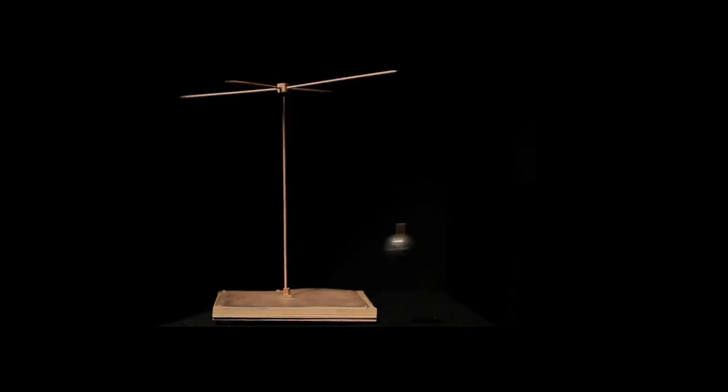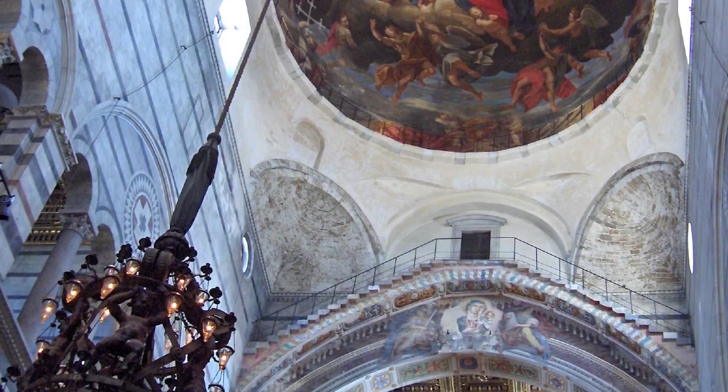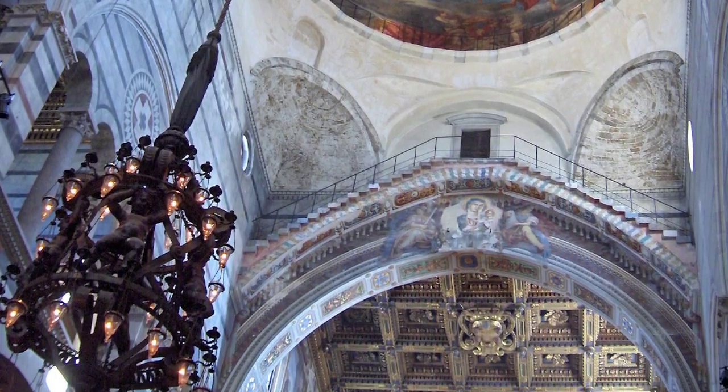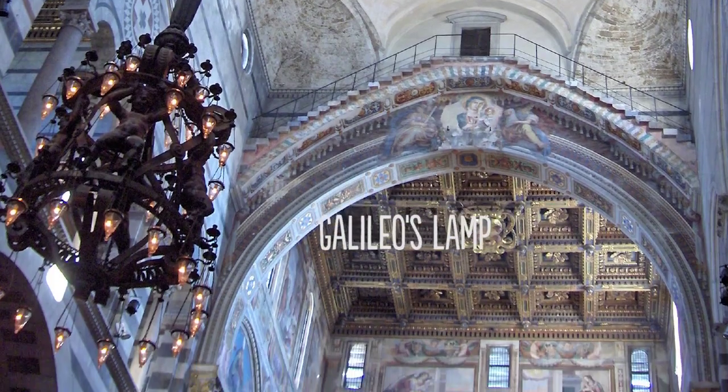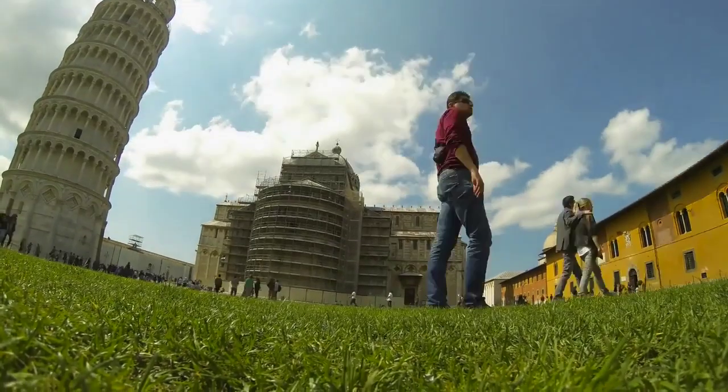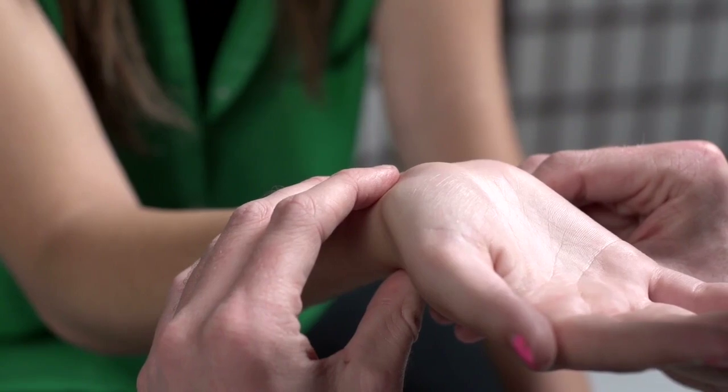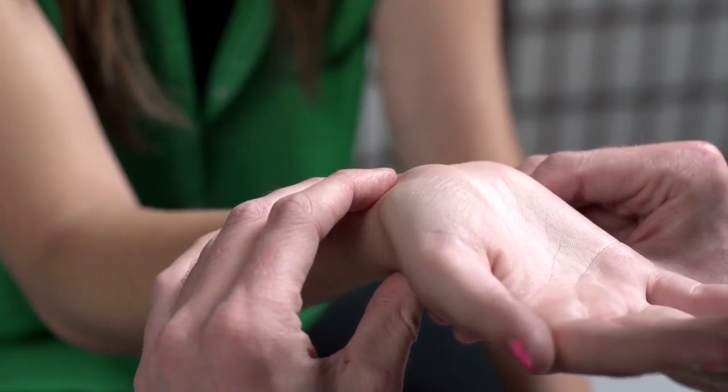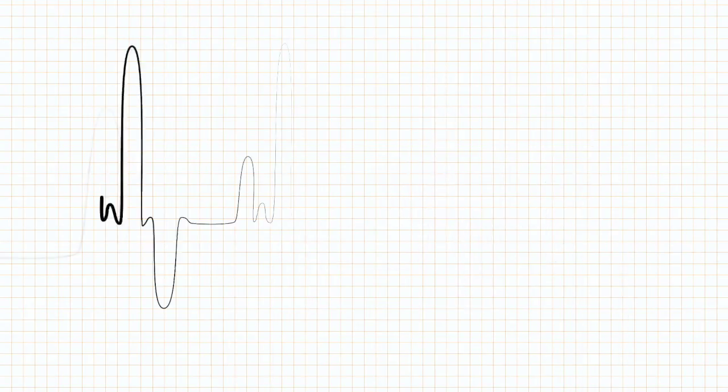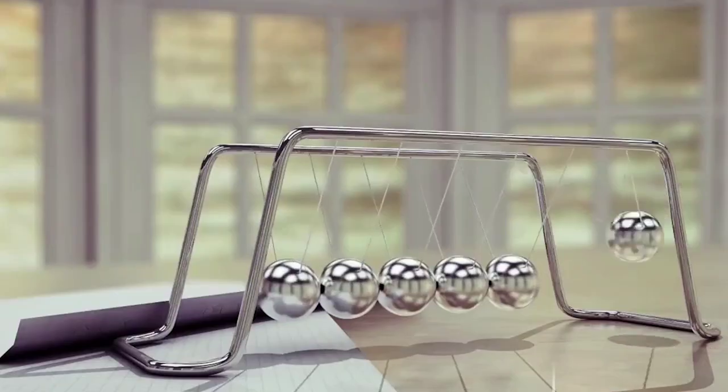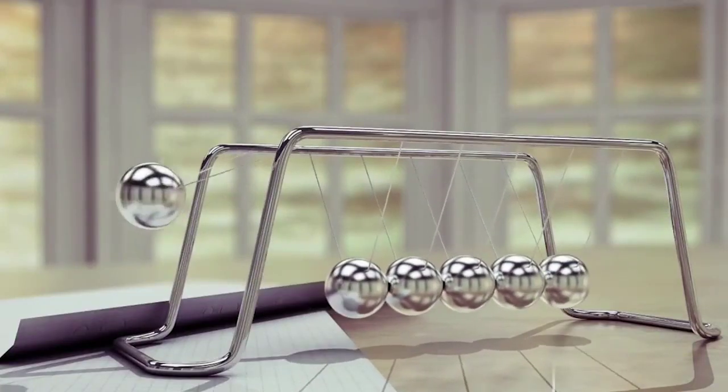He figured this out by observing a huge lamp swinging on a chain from the ceiling of the Pisa Cathedral in Italy. Galilei used his pulse to time it as it moved back and forth. The pendulum gathers energy as it moves back and forth.